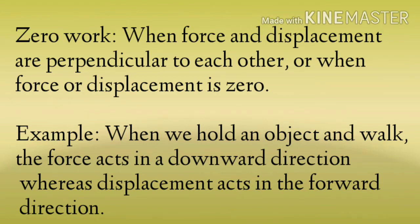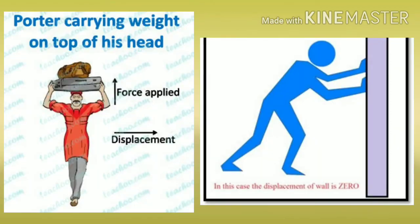For example, when we hold an object and walk — the force acts in the downward direction and the displacement acts in the forward direction. जैसे एक porter है जो अपने सिर पर weight उठा के एक जगह पर खड़ा है — ना तो वो move कर रहा है, ना किसी direction में displacement कर रहा है — तो यहाँ work zero होगा. क्योंकि वो सिर्फ एक जगह पर खड़ा है, उसने force लगाकर ऊपर रख लिया, लेकिन displacement नहीं हो रही है, तो work zero होगा.